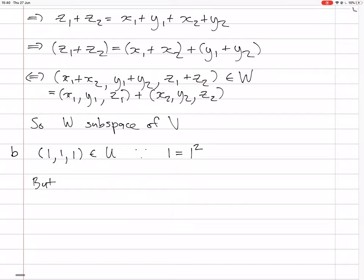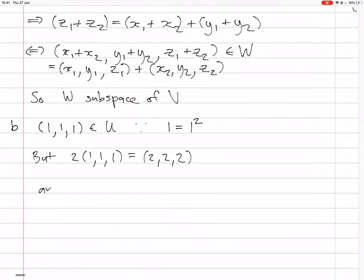But if you do, for example, 2 times 1, 1, 1, you get 2, 2, 2, right? And which is not in U, because 2 is not equal to 2 squared. So U not subspace. That's it.